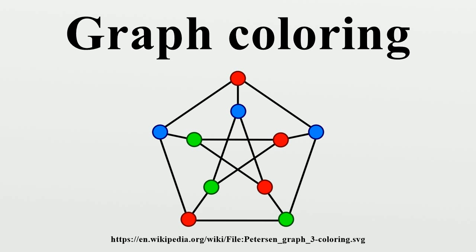Definition and Terminology. Vertex coloring: When used without any qualification, a coloring of a graph is almost always a proper vertex coloring, namely a labeling of the graph's vertices with colors such that no two vertices sharing the same edge have the same color.